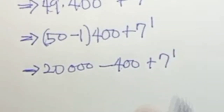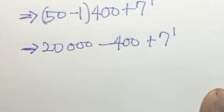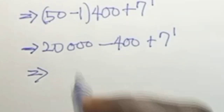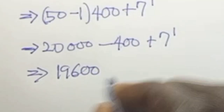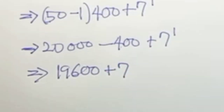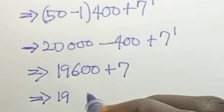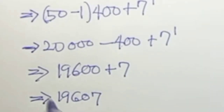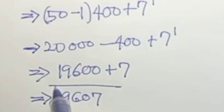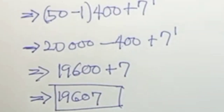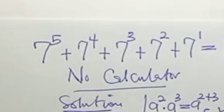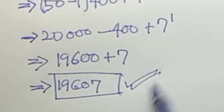So in the next line we have 20,000 minus 400, which is 19,600, plus 7. Therefore 19,600 plus 7 equals 19,607, and this is our final answer. The original expression simplifies to 19,607. Thank you for watching to the end!